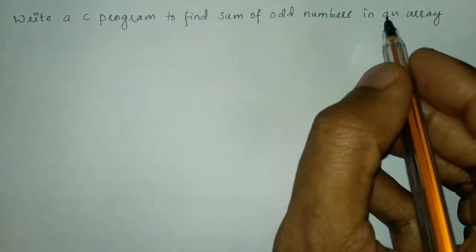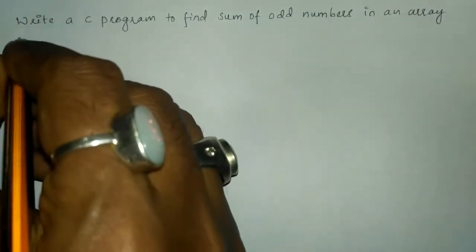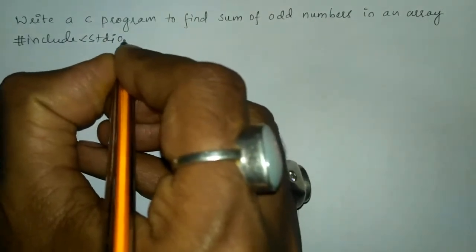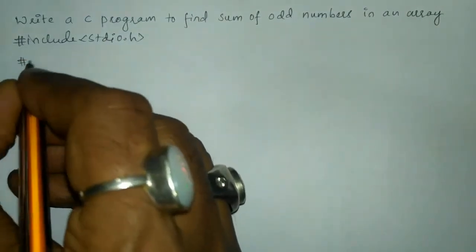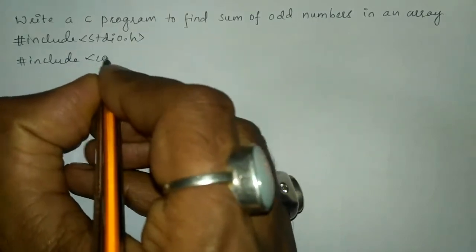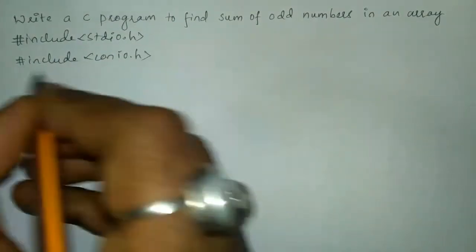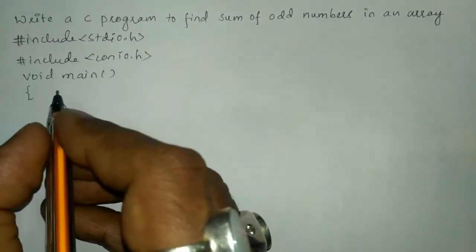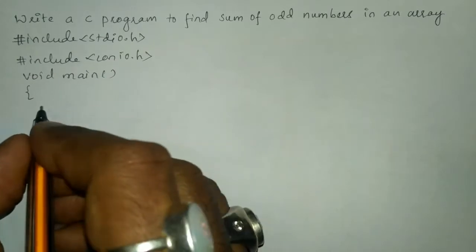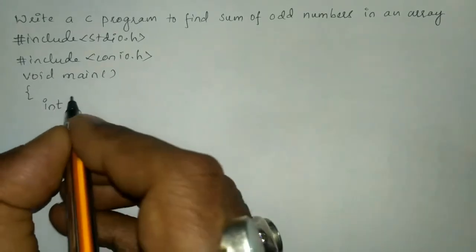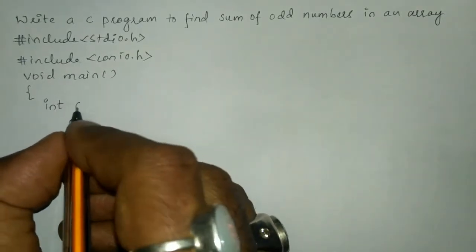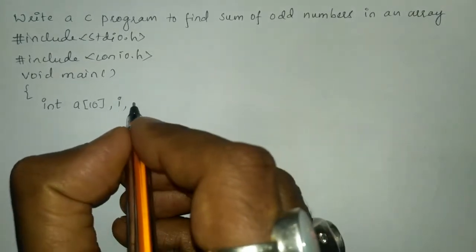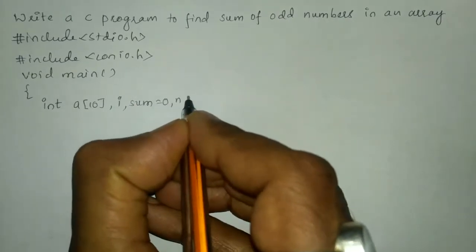Let us write preprocessor directives: hash include stdio.h, hash include conio.h, and the main function with a curly open brace. In the declaration section I am going to declare all variables as integers: array a of 10, i, and sum is equal to 0, and I take n.